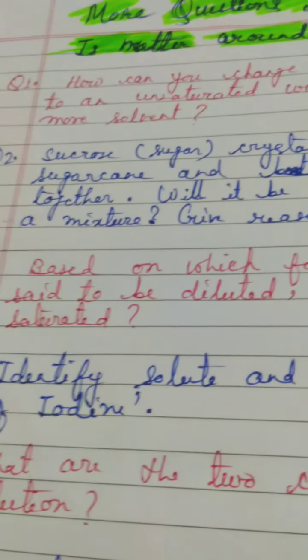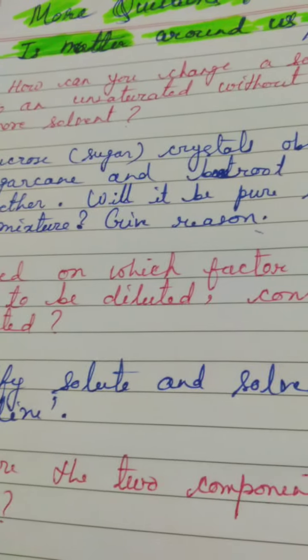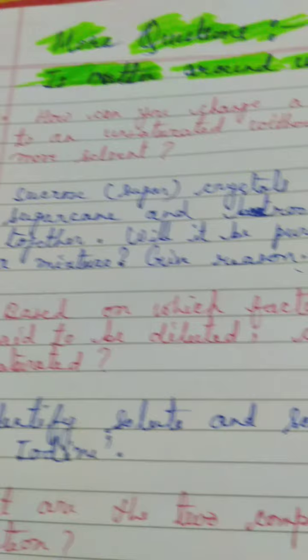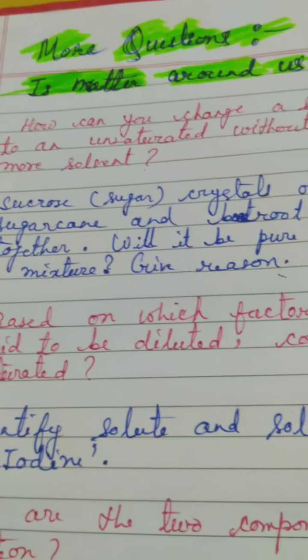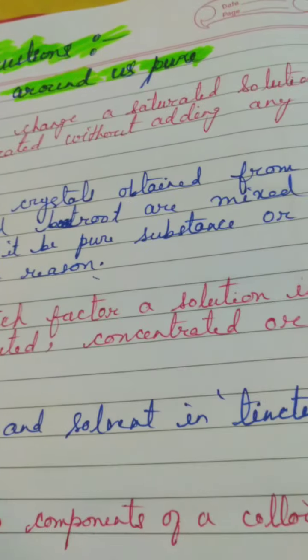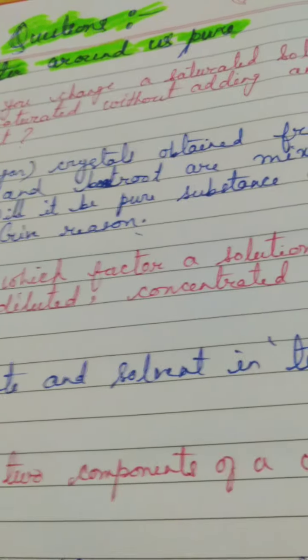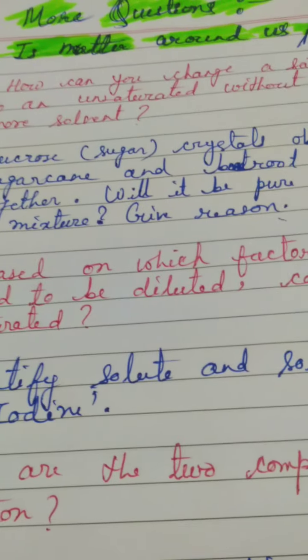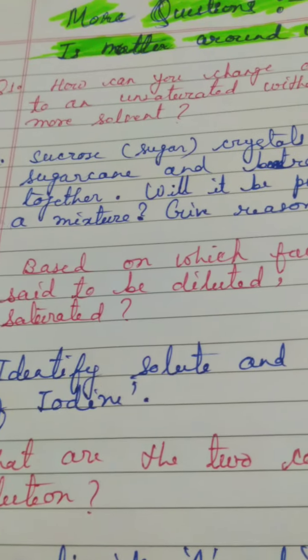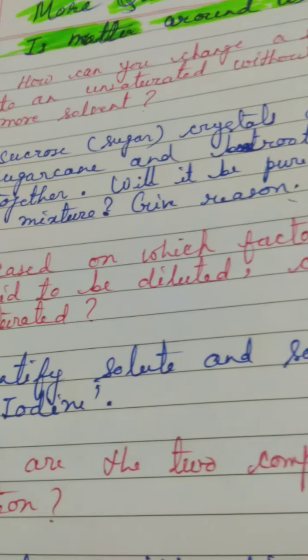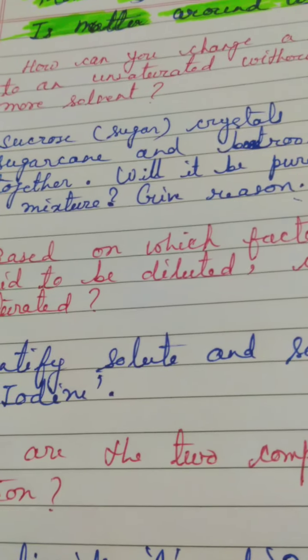What has been given in this question? That sucrose, which is also sugar, sucrose crystals obtained from sugarcane and beetroot. These are the two sources from where the sugar is obtained. It is prepared either from the sugarcane juice or beetroot juice are mixed together. Will it be pure substance or mixture and you have to give the reason. Because sucrose is sugar and it has got from, it has been collected from the two sources that is your sugarcane and beetroot, but both are and then we have mixed it together.